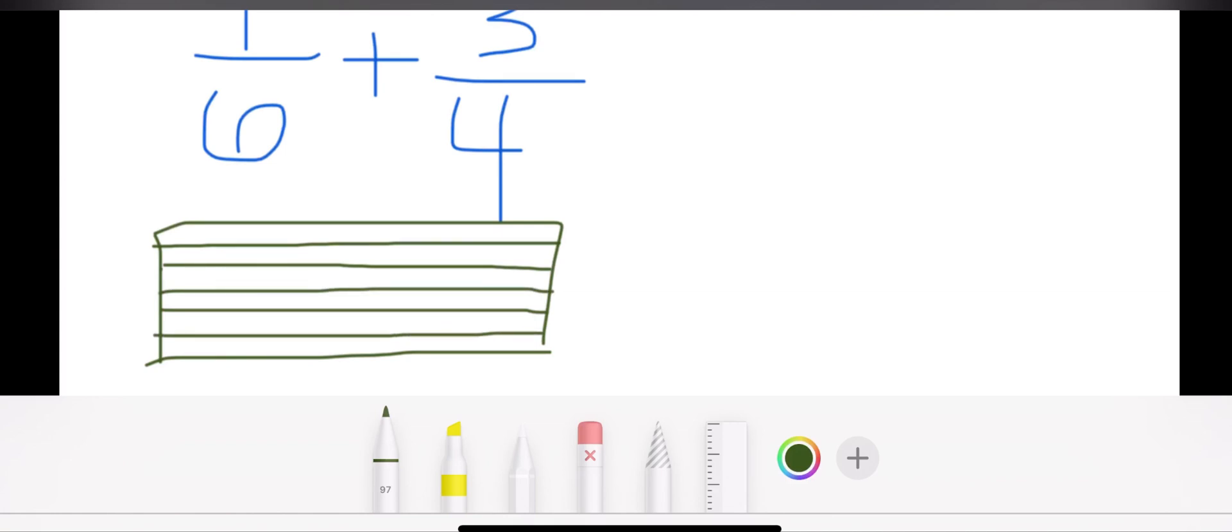So now I have one, two, three, four, five, six. And I know to represent one—my numerator—I'm just going to shade in one of those six.